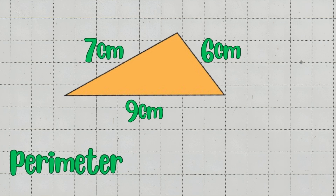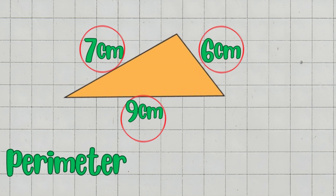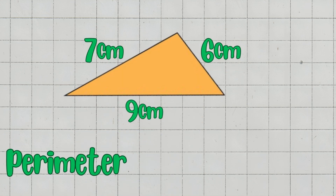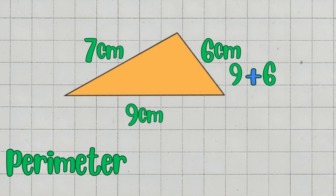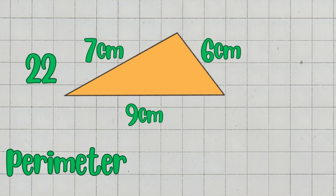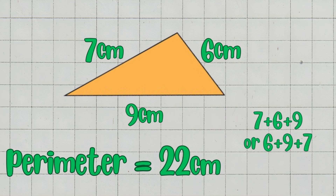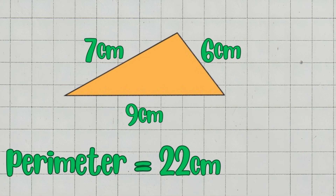Now let's find the perimeter. To do this, we simply add the lengths of all three sides together. First, we add the first two sides: 9 cm plus 6 cm equals 15 cm. Then we add the third side: 15 cm plus 7 cm equals 22 cm. The perimeter of this scalene triangle is 22 cm. It's not wrong to arrange the figures the way you want, but make sure you don't miss any numbers.